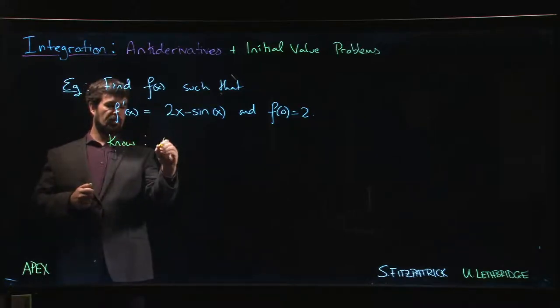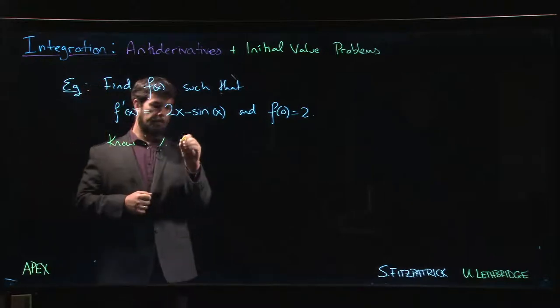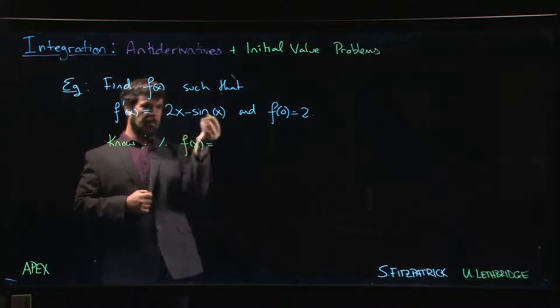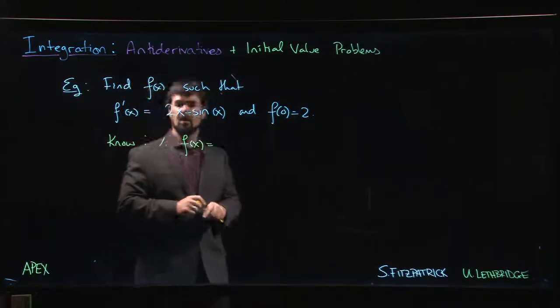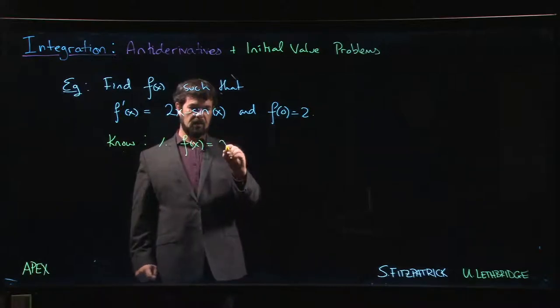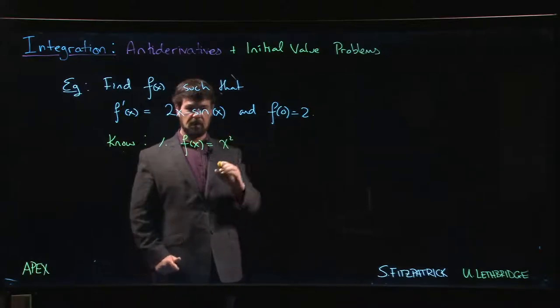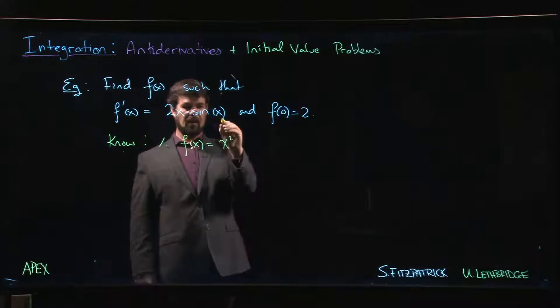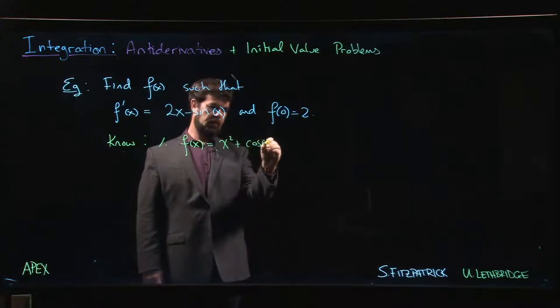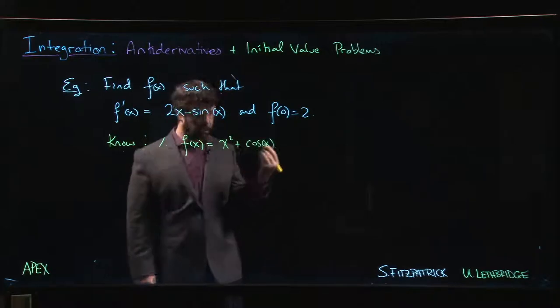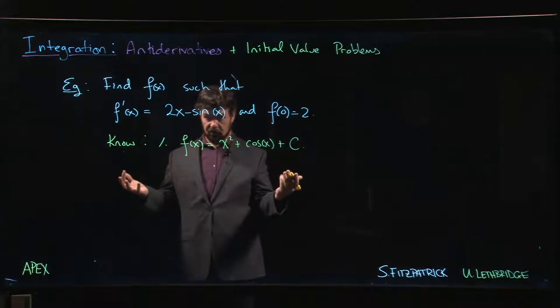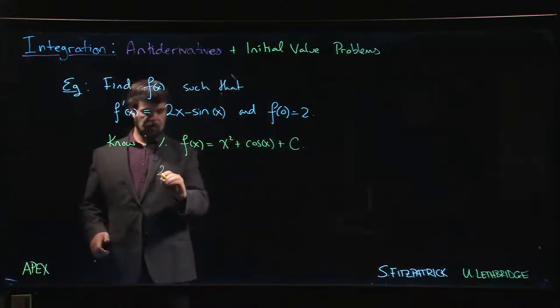f(x) should be—and now with a bit of practice you might be at the point where you can just write down these antiderivatives. So we say, what function has 2x as its derivative? That's x². What function has negative sine x as its derivative? Well, that's cosine. And of course there might be a constant, so we have this undetermined constant of integration. But we also